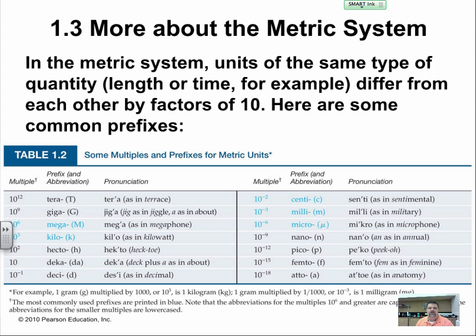The metric system units are the same type of quantity, length or time, and differ from each other by factors of 10. Here are some common prefixes. Tera is 10 to the 12th, giga is 10 to the 9th, mega is 10 to the 6th, kilo is 10 to the 3rd, hecto is 10 to the 2nd, deca is 10.